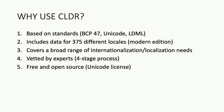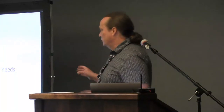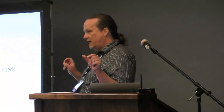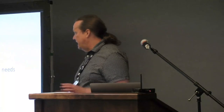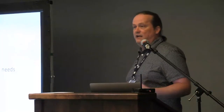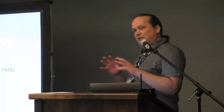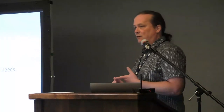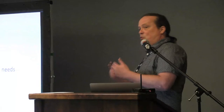CLDR includes data for 375 different locales in the modern edition. CLDR comes in two editions — modern and full — and the difference is how many locales are supported. The data covers a really broad range of internationalization and localization needs: number formatting, date formatting, duration formatting, list formatting, unit formatting, and also some interesting supplemental data like GDP for countries, which languages are used in which countries, and which scripts different languages use.